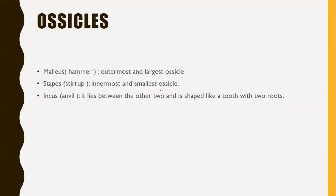The ossicles, also called ear bones, consist of three bones in the middle ear: malleus, stapes and incus. The malleus is hammer-shaped and is the outermost and largest ossicle. The stapes is the smallest ossicle in the human body, stirrup-shaped, and is the innermost ossicle. The incus is anvil-shaped and lies between the malleus and stapes, shaped like a tooth with two roots.